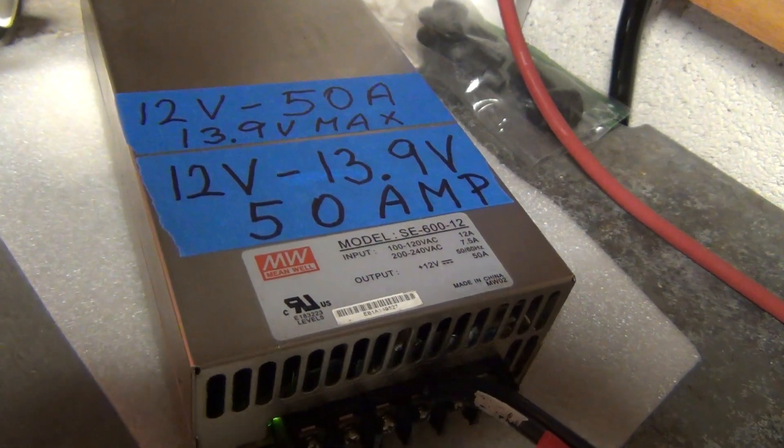I wish that these terminals were just a little bit better built, but let's get into the test. So here we have the Mean Well, it's the model SE 612, so the maximum voltage I can get out of this one is 13.9 volts.